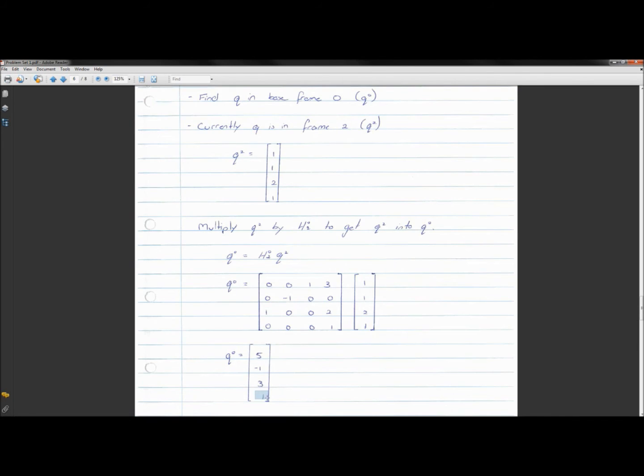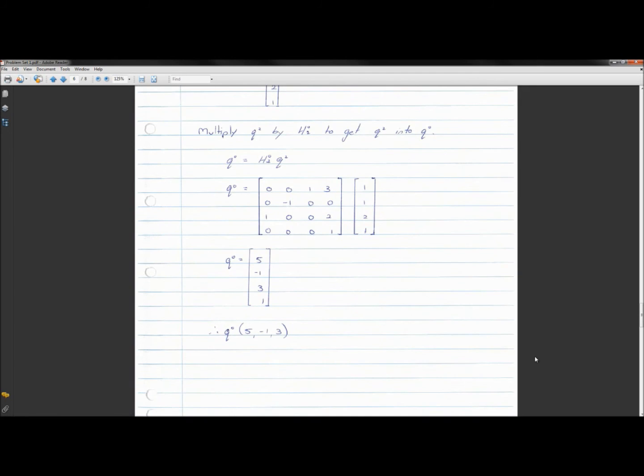You notice that this 1 still trails here. You just basically take that off. It's just like a tailing 1, and you just ignore it. So Q0, or Q in the base reference frame, is 5X, negative 1Y, 3Z, and as I said before, that's what we expected. So we know how our homogeneous transform works.